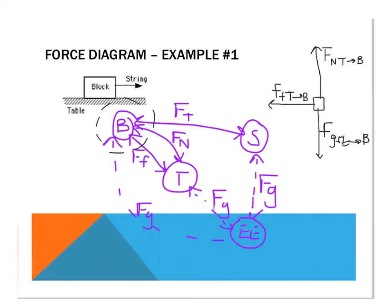One more force to place in our force diagram: the force of tension. Tension is always directed along the string or chain or whatever is applying tension. Looking at the picture, the string is going this way, so the force of tension will be this way — the force of tension that the string applies to the block. Getting these force diagrams right is going to be the key to making problem-solving easy. Note that in this force diagram there happens to be one force up, one down, one to the right, and one to the left — but that is not always going to be the case.